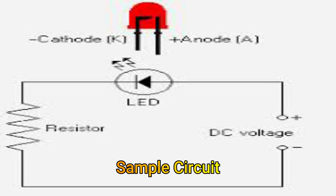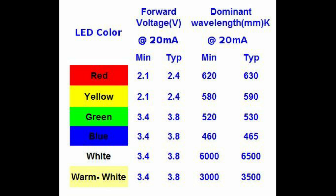Positive DC voltage nakakonek sa anode, positive ng LED. Then yung negative LED cathode nakakonek sa end ng resistor. Then the other end ng resistor nakakonek sa negative DC supply. Ito yung table ng LED color. Dito natin makikita yung forward voltage ng bawat kulay ng LED. Example, yung yellow meron siyang 2.1 volts minimum. Ang typical voltage niya is 2.4 at 20 milliamps. Take note yung mga forward voltage ng iba't ibang color ng LED.